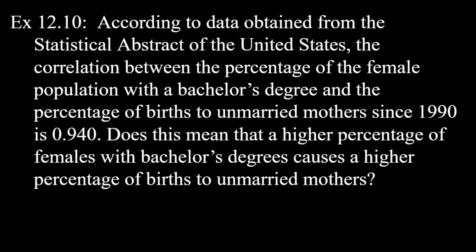For example 12.10, the correlation between the percentage of females with bachelor's degrees and the percentage of births to unmarried mothers since 1990 is 0.940. Does this mean that higher female education causes more births to unmarried mothers? No — people getting bachelor's degrees does not cause more births to unmarried mothers. Just because two variables have a positive correlation does not mean that one is causing the other or that they are directly related.